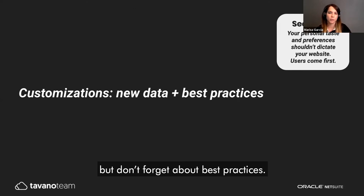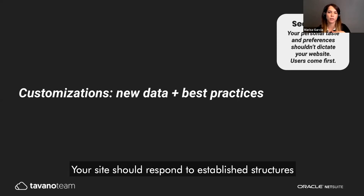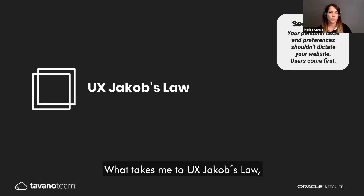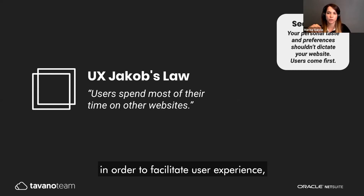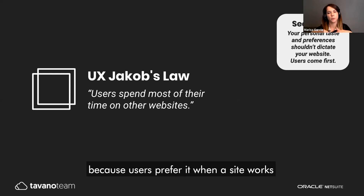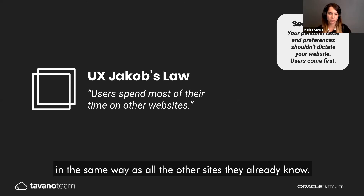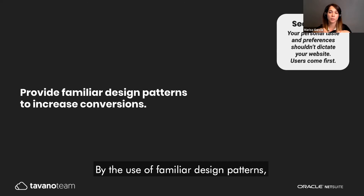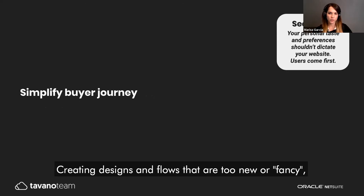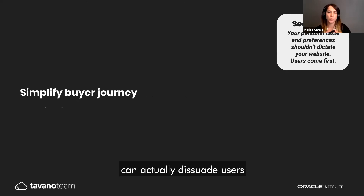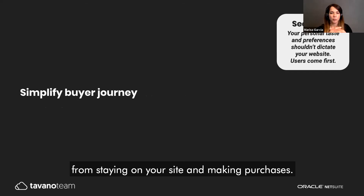Don't forget about best practices. Your site should respond to established structures and page standards. This leads to the UX Jacob's Law — a UX principle described by Jacob Nielsen that recommends the use of familiar patterns in design to facilitate user experience, because users prefer it when a site works the same way as all the other sites they already know. By using familiar design patterns, you simplify the learning process and increase purchase conversions. Creating designs and flows that are too new or fancy can actually dissuade users from staying on your site and making a purchase.